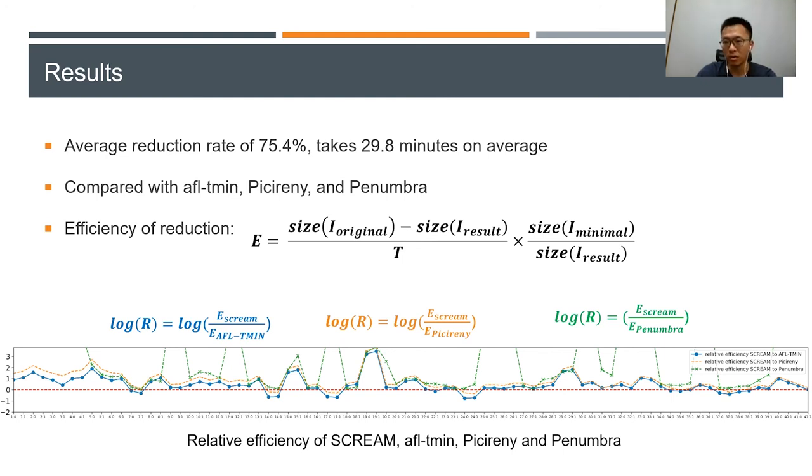When the log of relative efficiency is larger than zero, our tool is more efficient. As can be seen, SCREAM achieved a higher reduction efficiency on most of the cases.